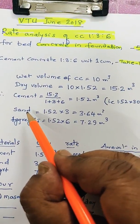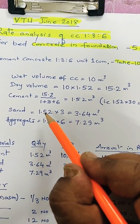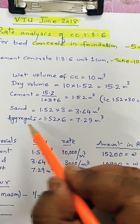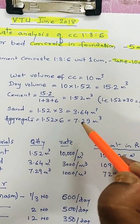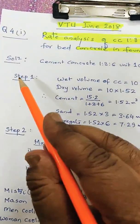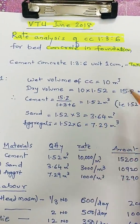Then sand: 3 times the cement, 1.52 × 3 is 3.64 cubic meters. Aggregate is 6 times the cement: 7.29 cubic meters. So this is the first step of calculation of materials.